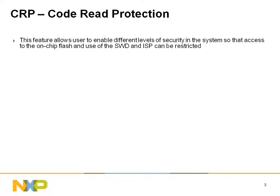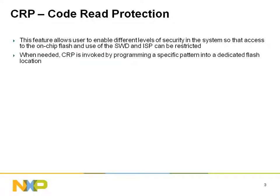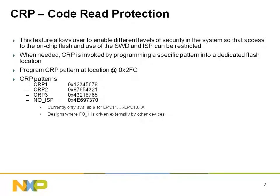The LPC-1100 and LPC-1300 families of parts support code read protection. This feature can be used to ensure that access to internal flash memory is restricted, thus protecting intellectual property. CRP is enabled at system reset by the on-chip bootloader. It can be configured in several ways by placing one of several key values at a specific memory location. Be aware that it is possible for your build environment to place arbitrary code or constants at this address, which can inadvertently enable CRP.